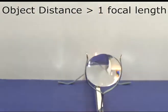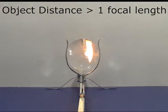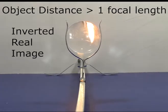If we look right down the Optics Bench, we are going to see an inverted real image because it's more than one focal length away.